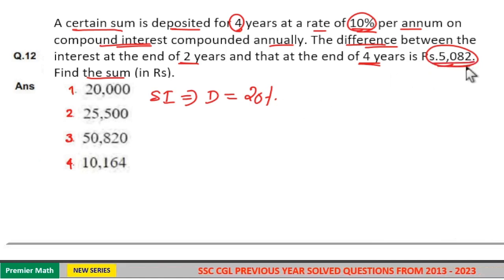In question, 5,082 is the compound interest difference. Now, this 20% should be less than 5,082, which means your answer should be less than what you will get in the final.